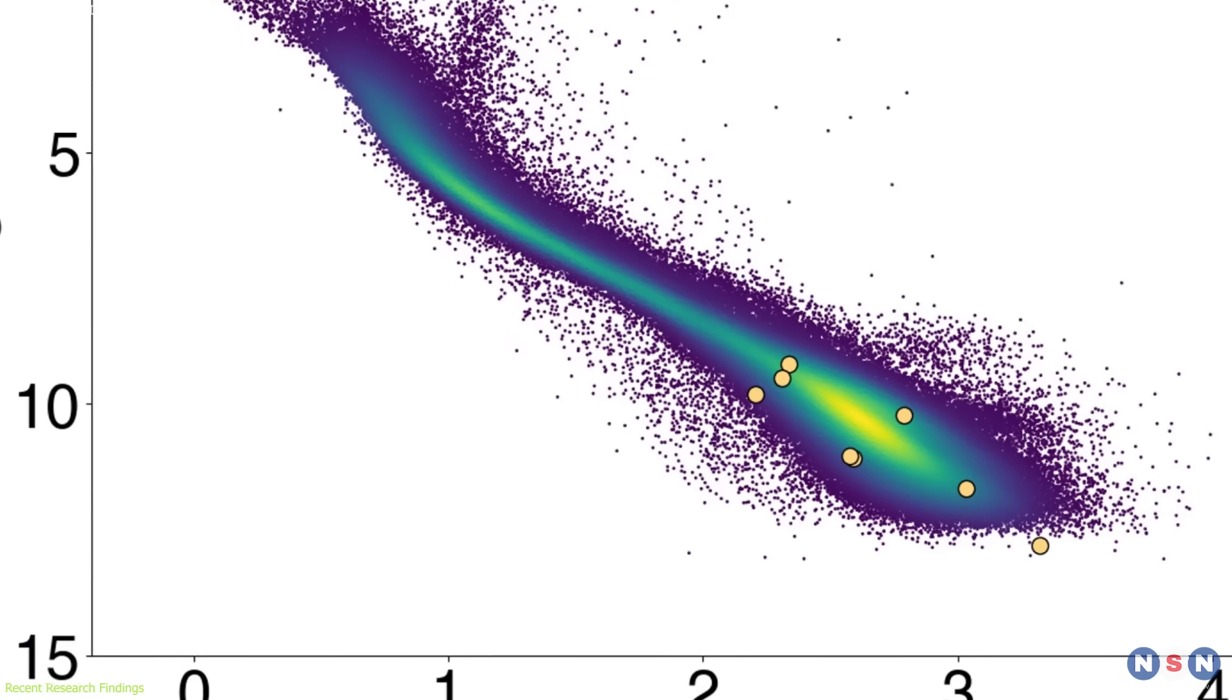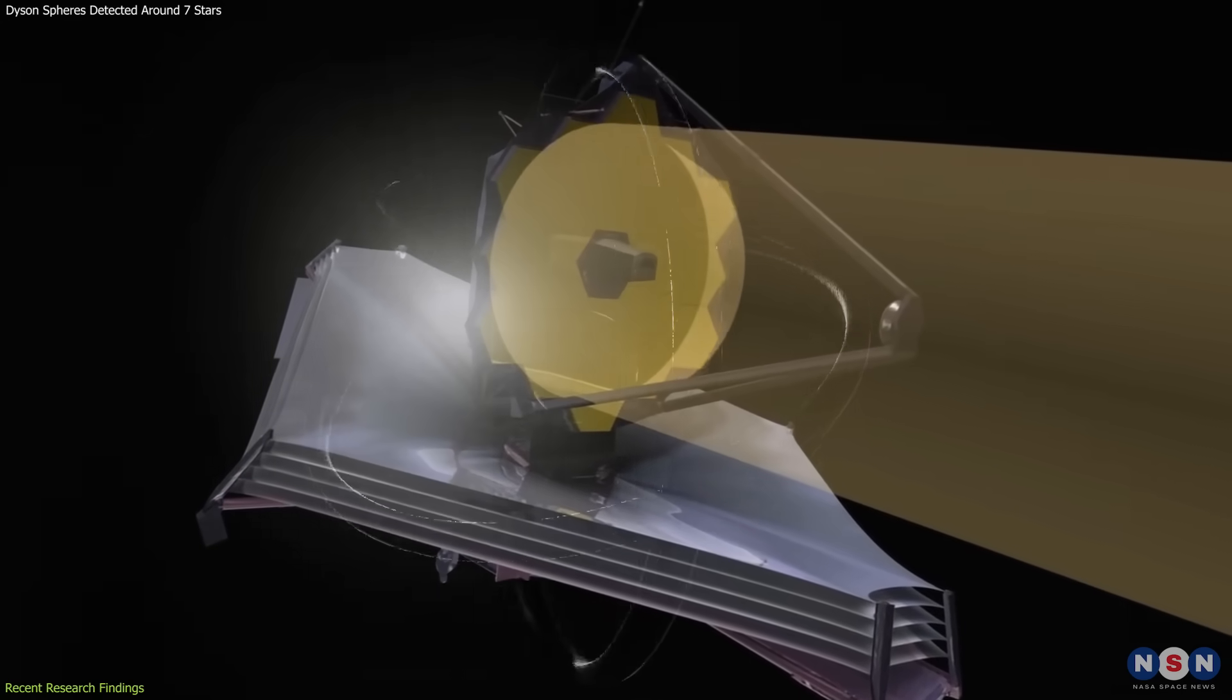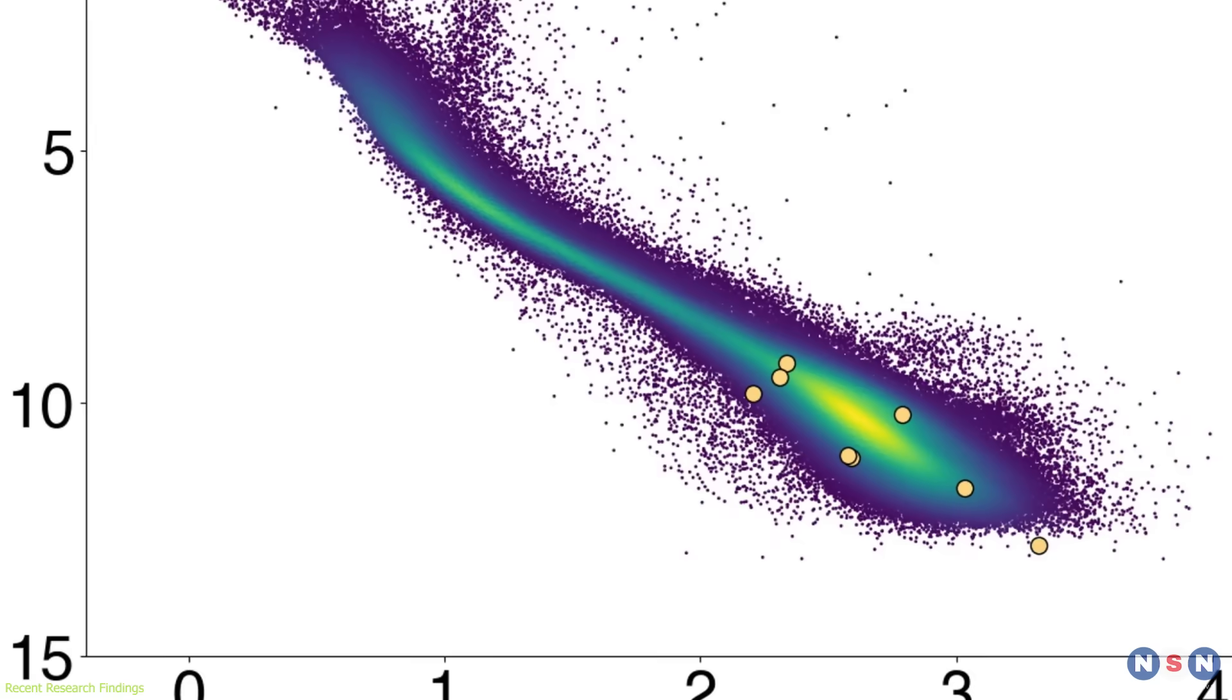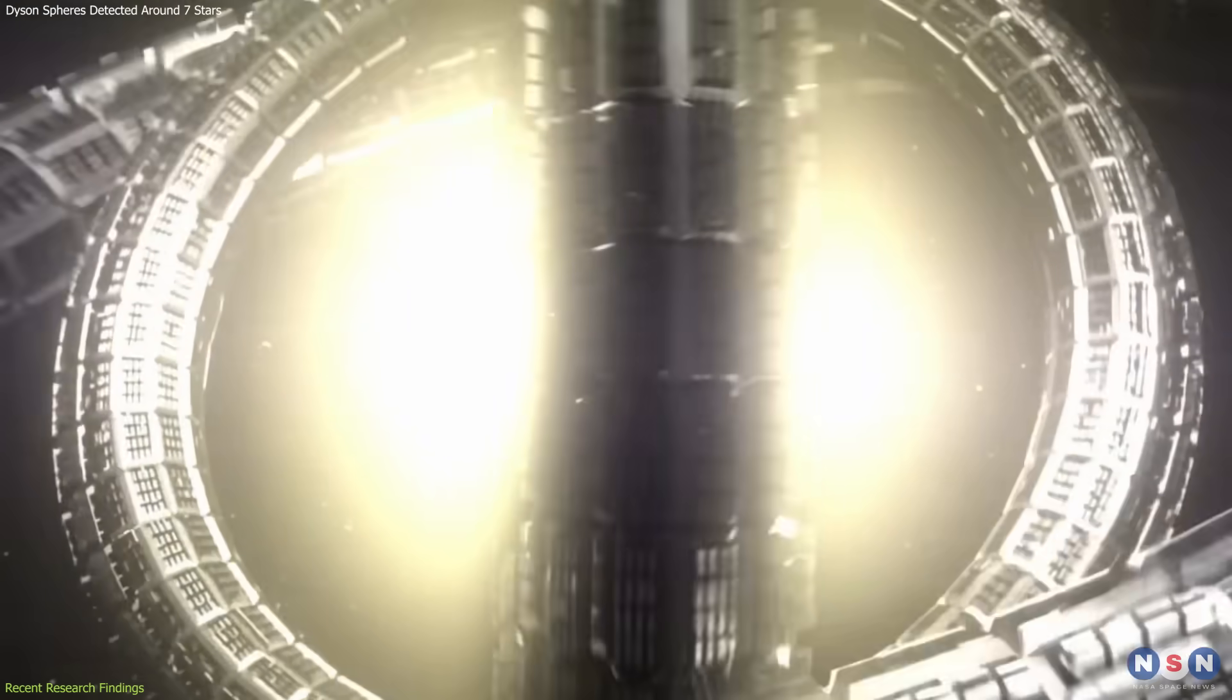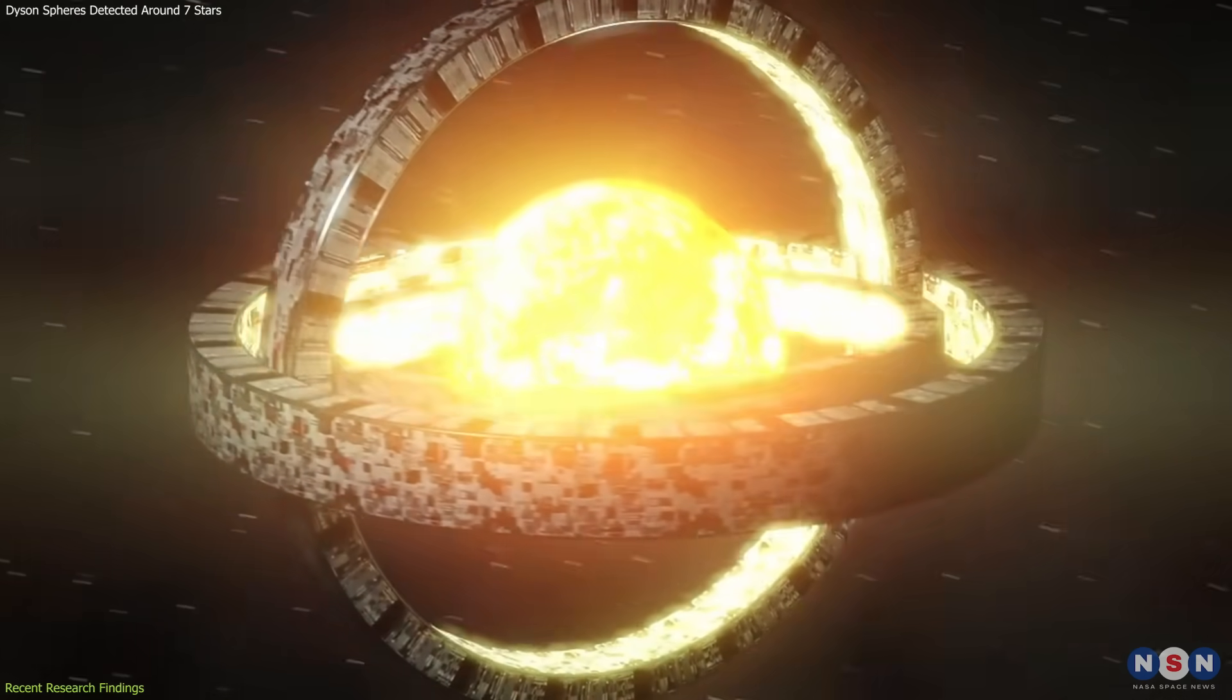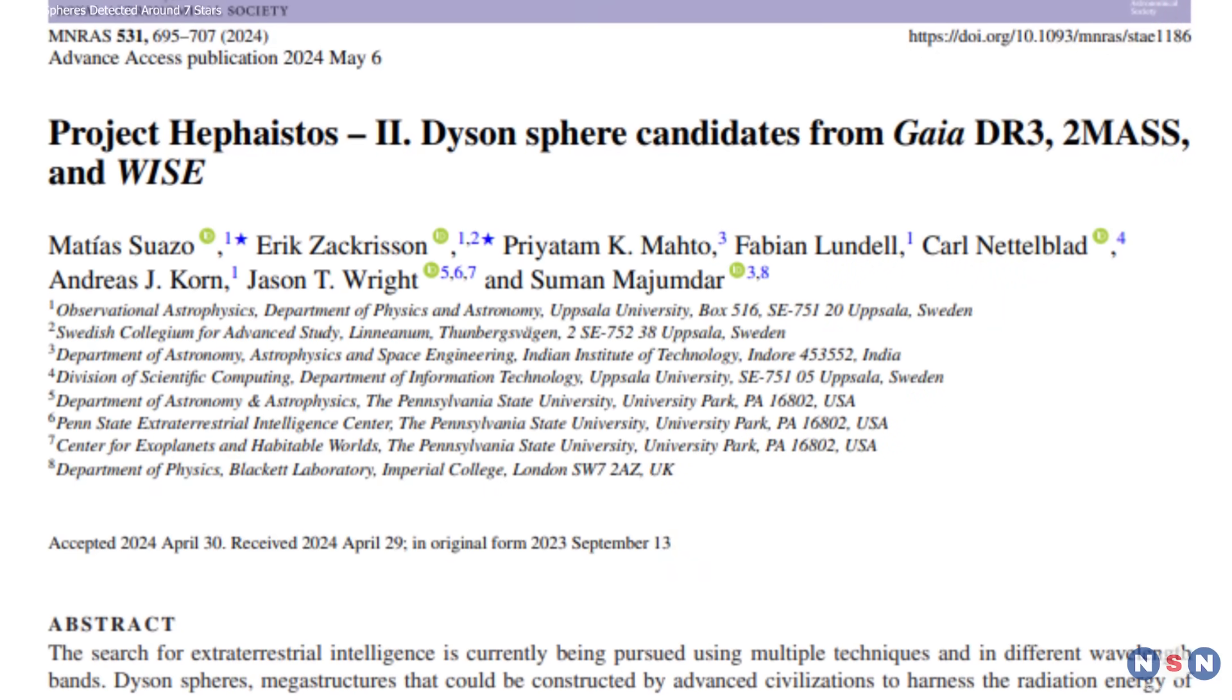To confirm the presence of these potential Dyson Spheres, researchers suggest follow-up optical spectroscopy, which could help determine whether the infrared excess emissions are due to natural phenomena or advanced technological structures. This additional analysis will be crucial in verifying the true nature of these sources and understanding the implications of this discovery.